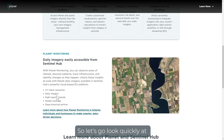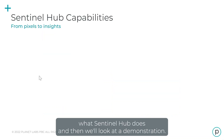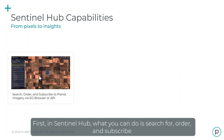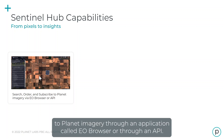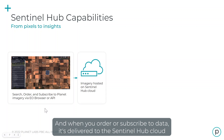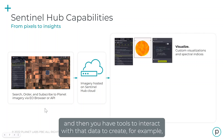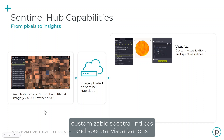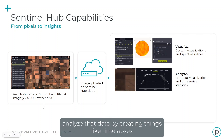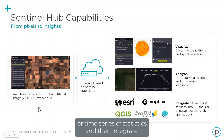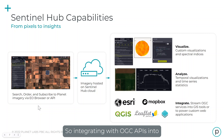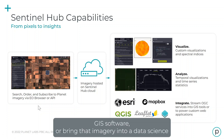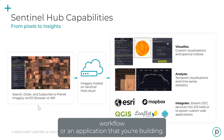Let's look quickly at what Sentinel Hub does before the demonstration. First, in Sentinel Hub you can search for, order, and subscribe to Planet imagery through an application called EO Browser or through an API. When you order or subscribe to data, it's delivered to the Sentinel Hub cloud and then you have tools to interact with that data to create, for example, customizable spectral indices and spectral visualizations. You can analyze that data by creating things like time lapses or time series of statistics, and then integrate with OGC APIs into GIS software or bring imagery into a data science workflow or an application you're building.